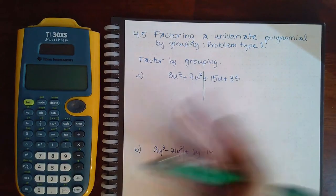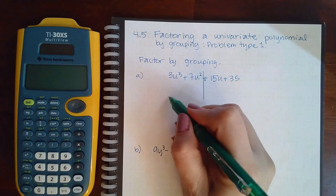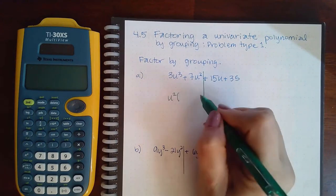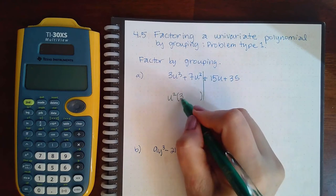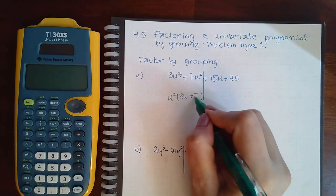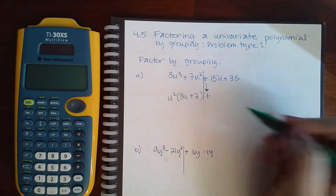So from this side I have a u² in common and no number between 3 and 7. So when I factor the u² out I'm going to have 3u plus 7. And then over here you have to bring down the plus sign, you have no choice about that. You have to bring down that middle sign.